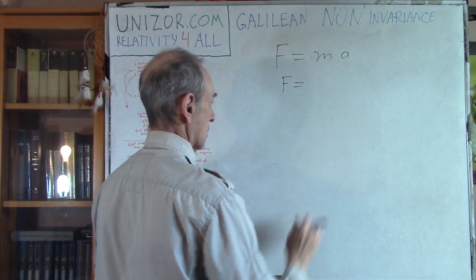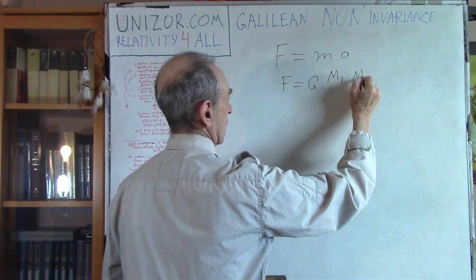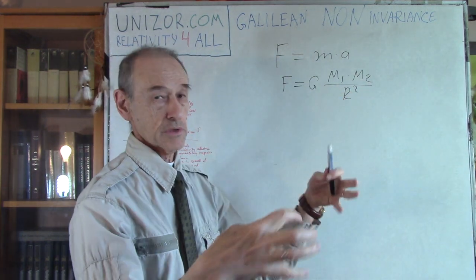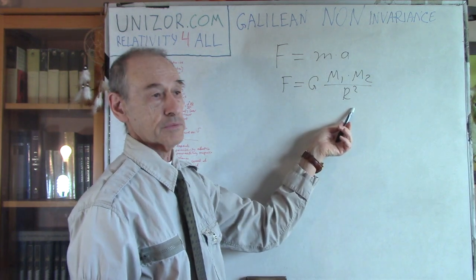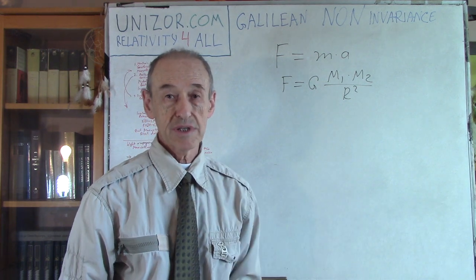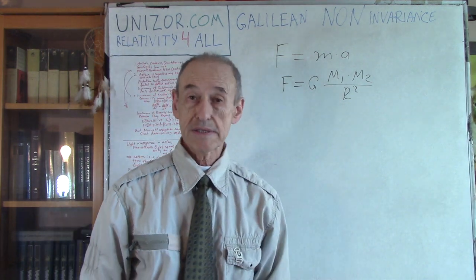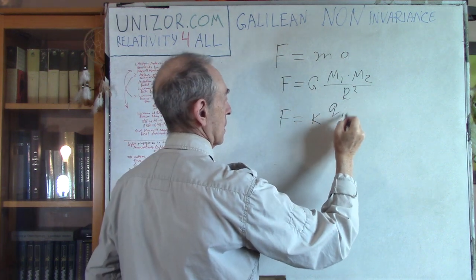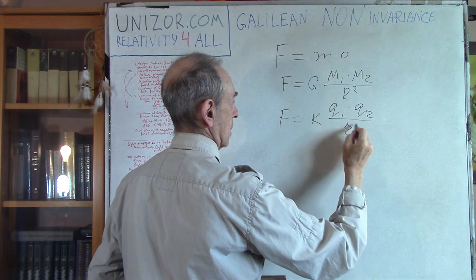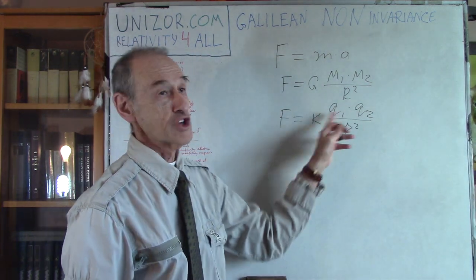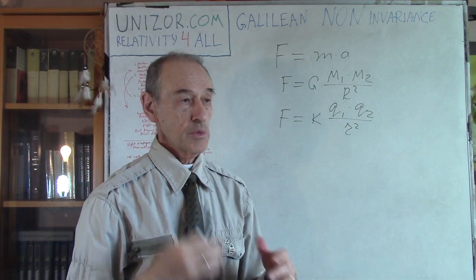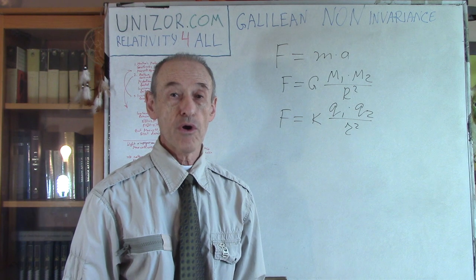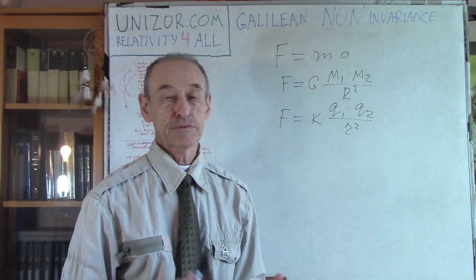The gravitational force formula — G times mass one times mass two, divided by the square of the distance between them. We had electrostatics and Coulomb's law, which is very similar but applies to charges — positive, negative. We had a certain number of very important laws which were experimentally confirmed and theoretically derived from some principles.